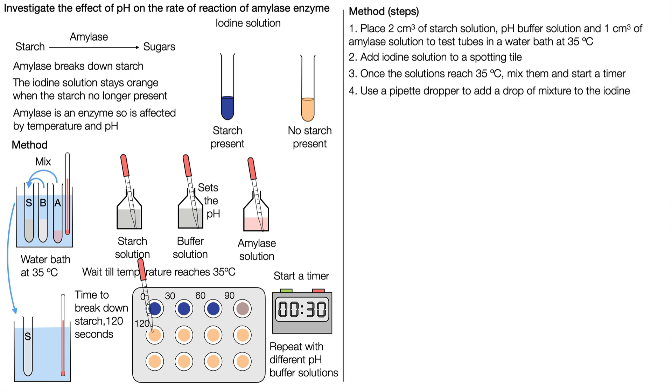We would use a pipette dropper to add a drop of the mixture to the iodine. If starch is present the mixture and iodine solution turns blue-black, and we will continue until the iodine solution and the mixture remains yellow-orange or a yellow-orangey-brown color. Each one of those is acceptable; we tend to stick with orange.